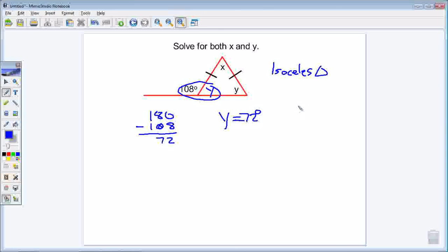So, these two base angles are 72 plus 72, which leaves me with 144. So, what does that leave me for my x?